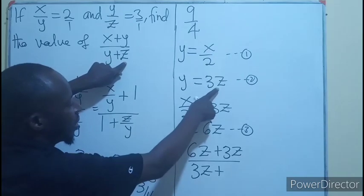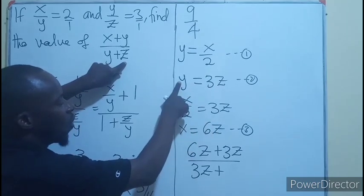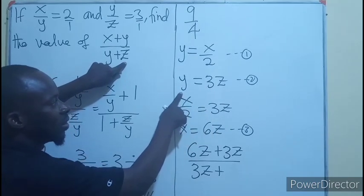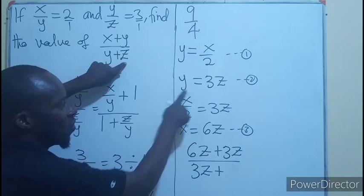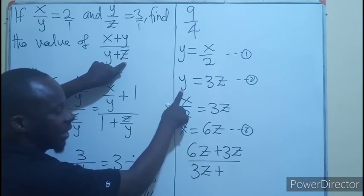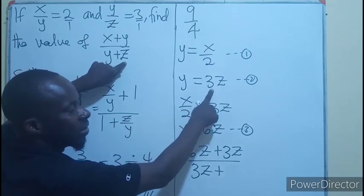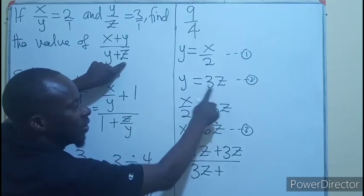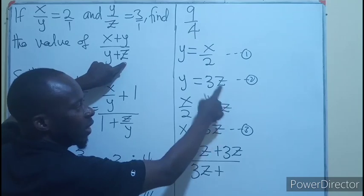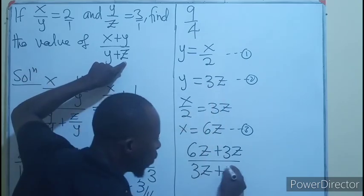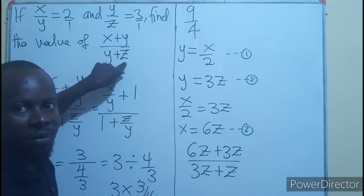Or right here, it is going to be y over 3. If you divide y by 3, where is the y? In terms of z, it will still be this. So it will be 3z over 3. It will cancel to give you only the z.